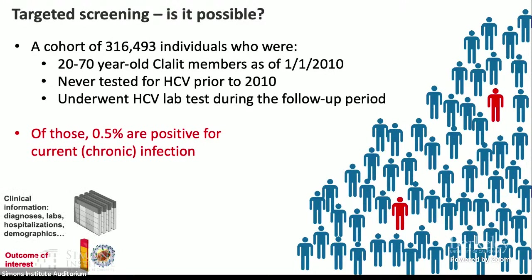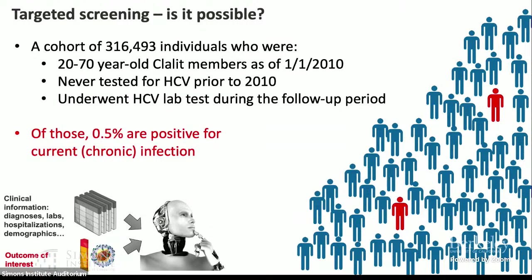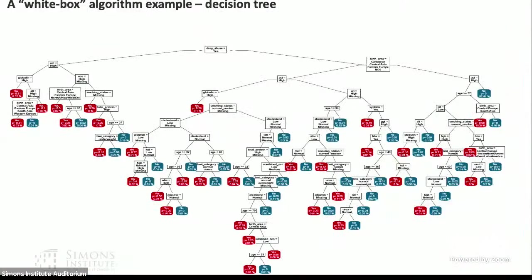In Israel, experts identified the most fundamental risk factors for being a silent HCV carrier: being a former resident of a country where HCV is endemic, having received blood products prior to 1992, and being an IV drug user. This could be plotted as a decision tree — but it's a very simplified decision tree with only one split. Most of the population won't be screened; those belonging to these three risk groups — about 10% of the population — should be screened.